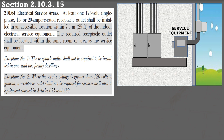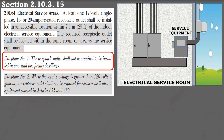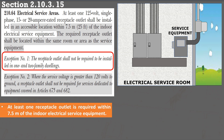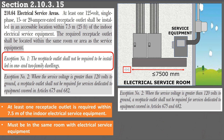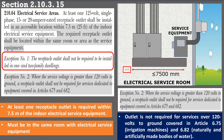Section 2.10.3.15 covers the electrical service area for multi-family dwelling units, as mentioned in exception number 1. For the indoor service area, at least one outlet is required in an accessible location within 7,500 mm from the indoor electrical service equipment, and this outlet must be in the same room as the service equipment. Exceptions also apply if the service voltage is over 120 volts to ground, and for services dedicated to equipment covered in article 6.75 (irrigation machines) and 6.82 (naturally and artificially made bodies of water), as stated in exception 2.